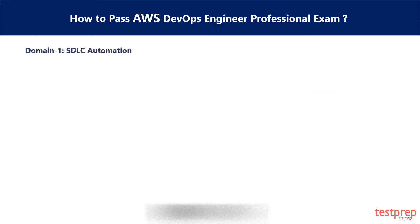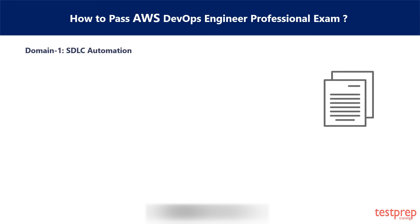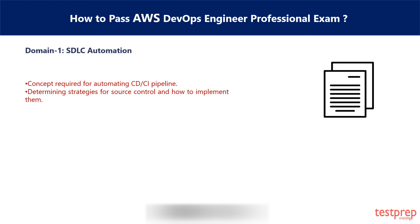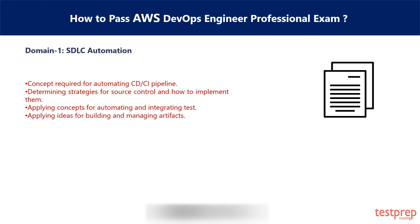Domain 1 is SDLC Automation. SDLC Automation is considered an important area to focus on as it covers 22% of the exam weightage, so you need to spend more time here. The sections included in this module are: 1. Concepts required for automating the CD pipeline. 2. Determining strategies for source control and how to implement them. 3. Applying concepts for automating and integrating tests. 4. Applying ideas for building and managing artifacts. 5. Determining deployment strategies.